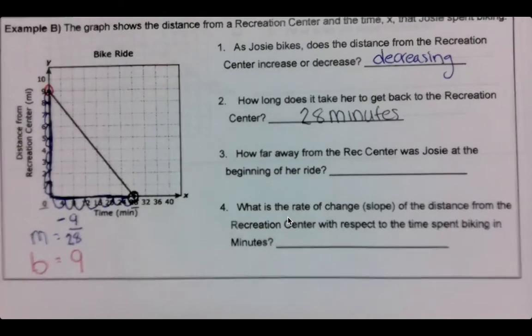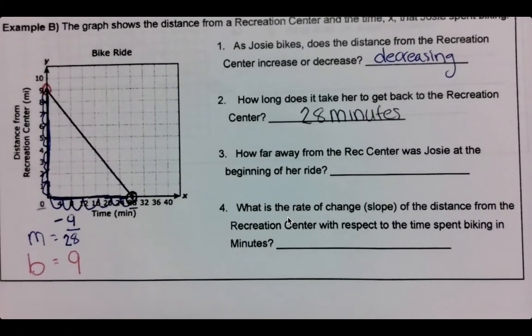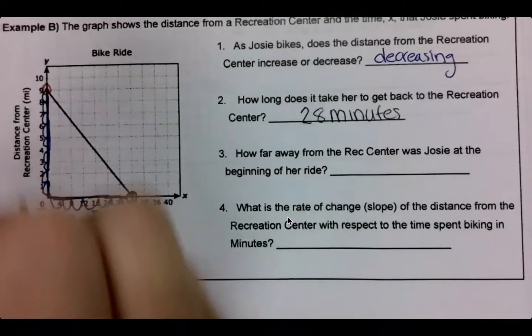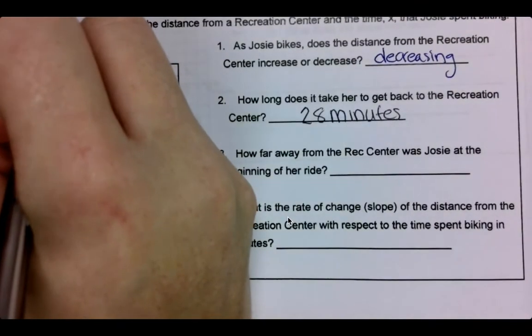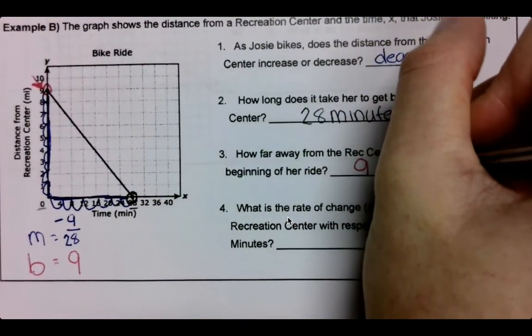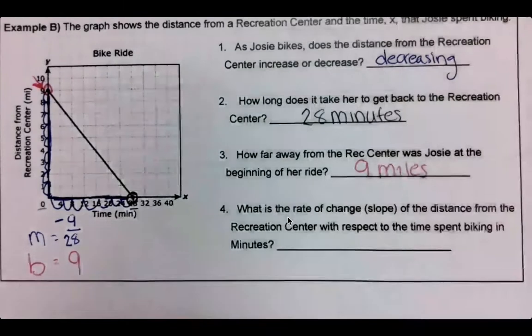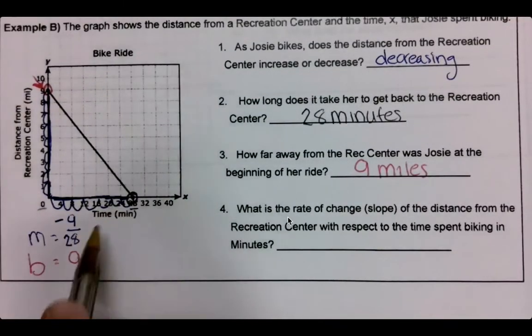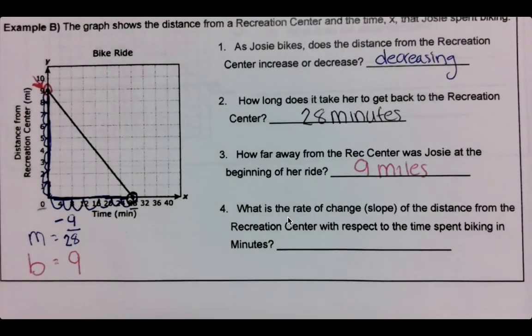How far from the rec center was Josie at the beginning? Well, at the beginning, that's our B. So she was nine. And then I'm using my labels, right? Miles here, minutes from the last problem there.